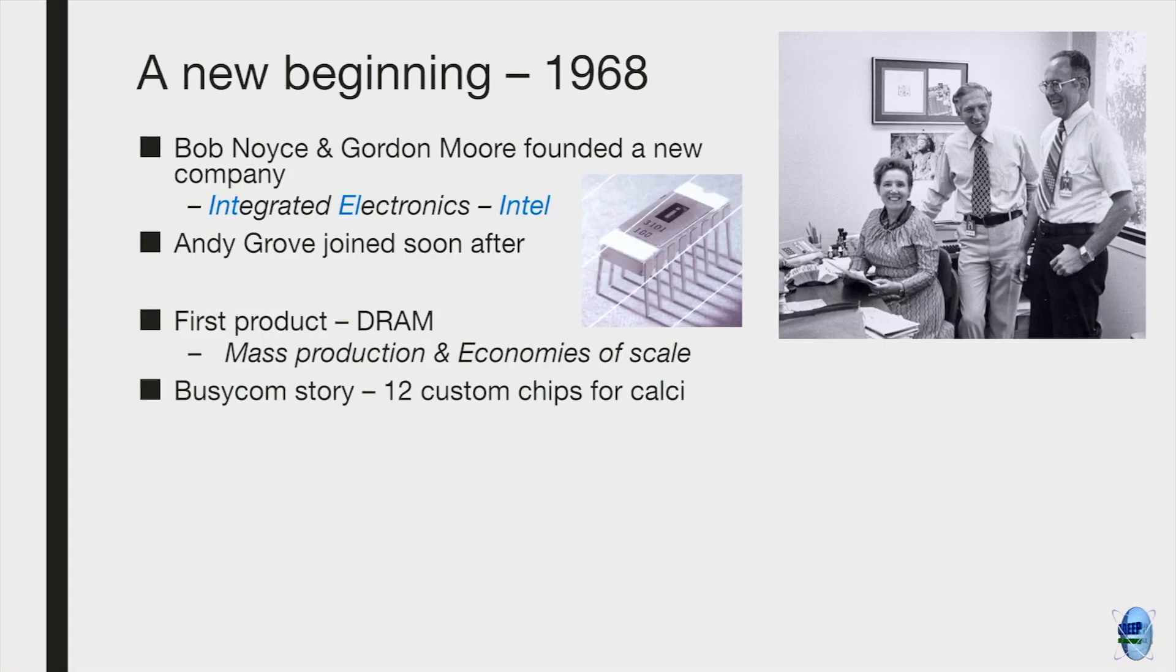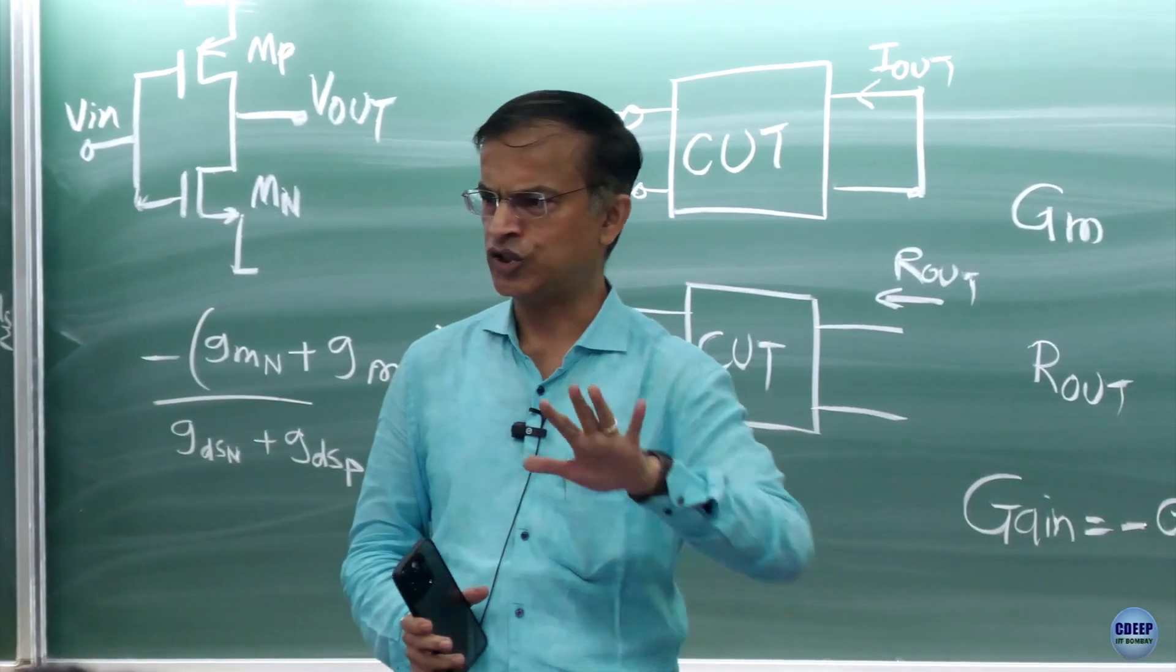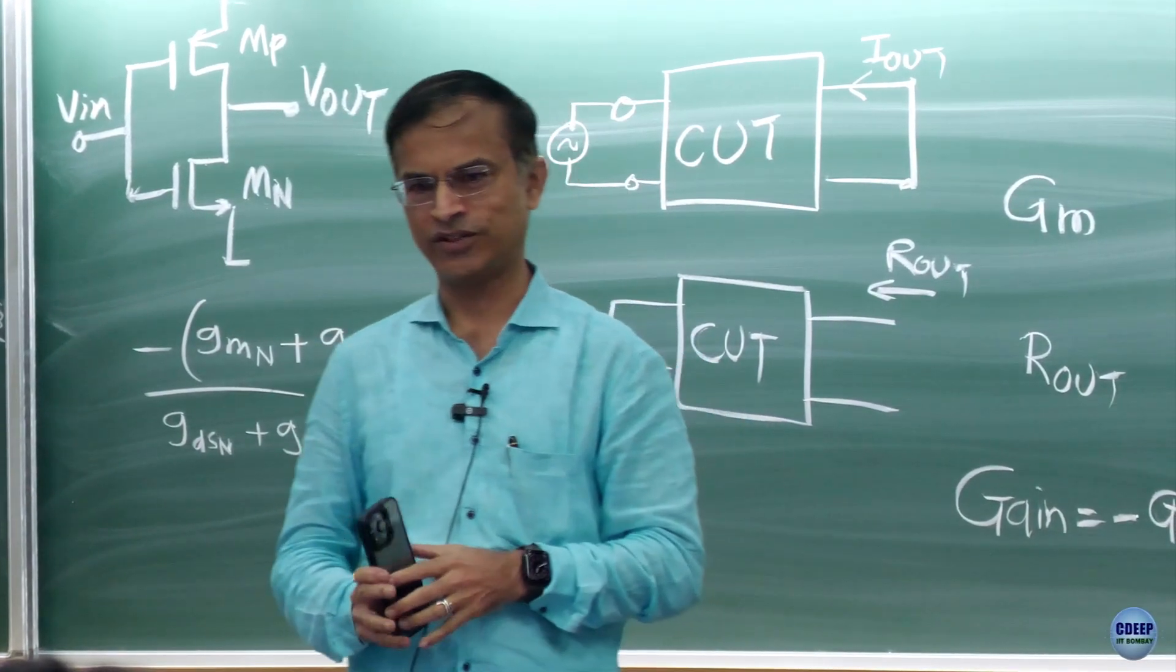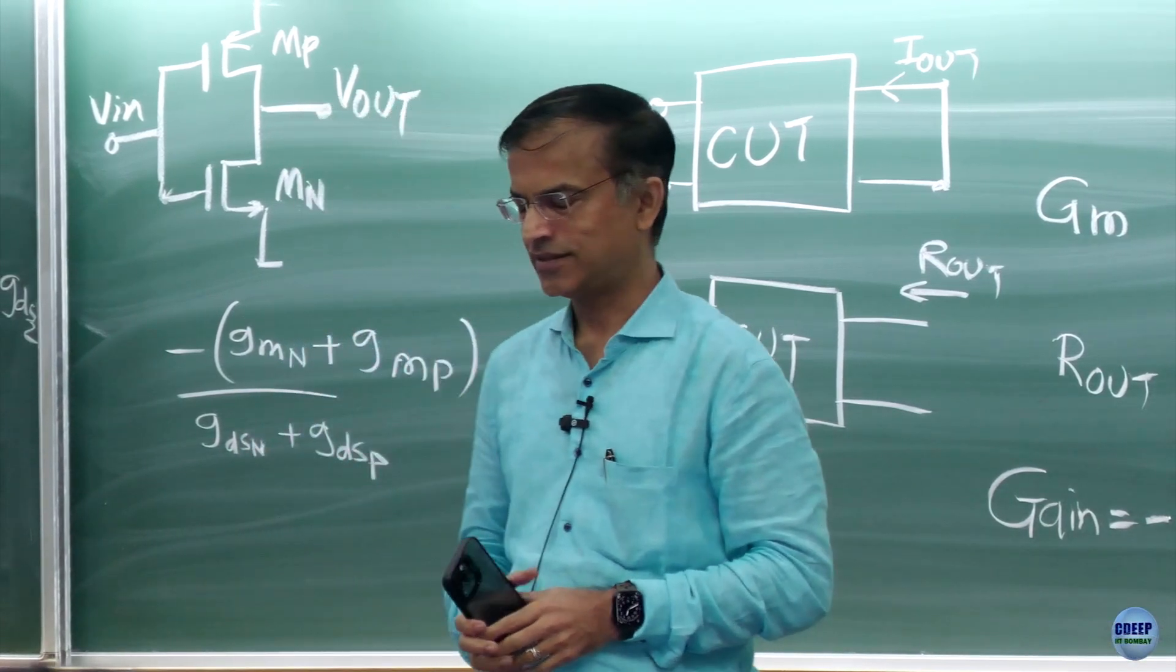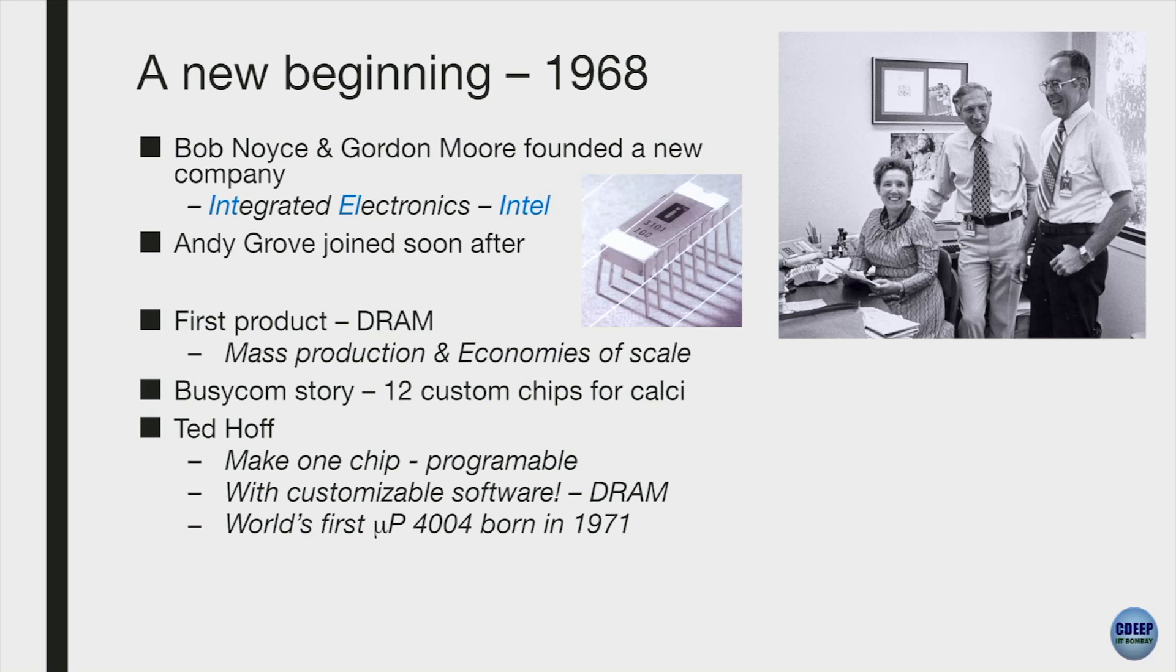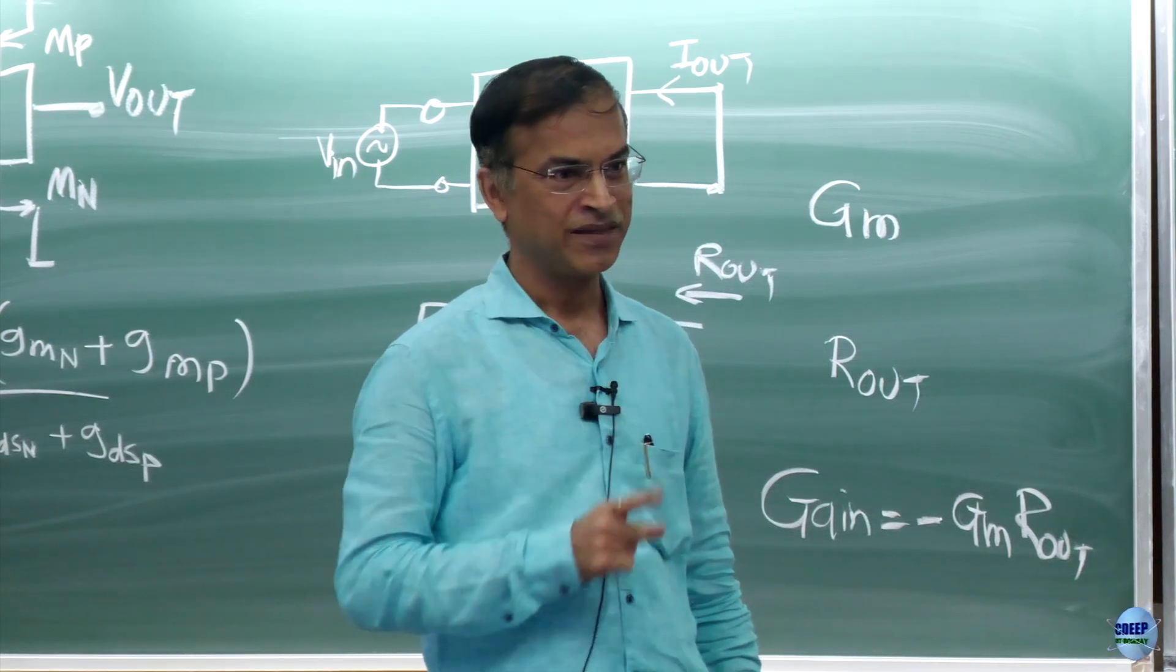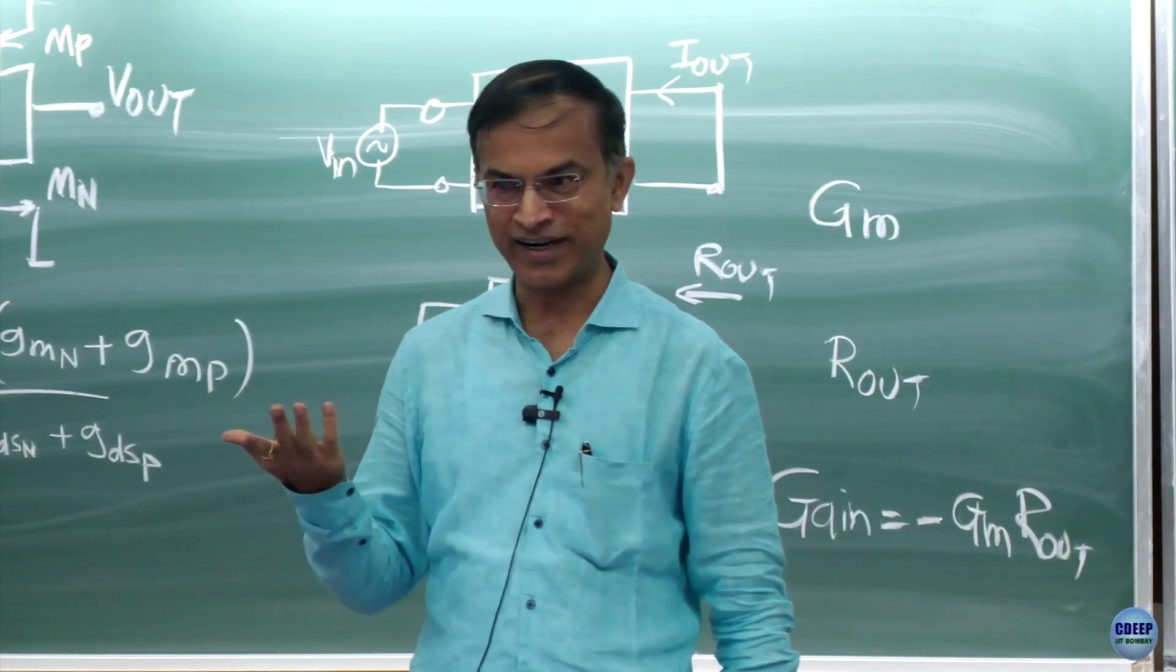So, the next thing was, a Busicom company from Japan. So, this company came to Intel, Bob Noyce and said that, hey, I want to build a calculator using your chips. So, they wanted 12 custom chips. Each chip was separate. Some architecture was different here and there for a calculator. Bob Noyce gave this problem to Ted Hoff. He was at Intel. And what he came up with was rather than designing 12 chips, why don't I design one chip? Imagine, at that point, there are nothing existed. Why don't I design one chip? And I'll make it programmable. Very simple idea, correct?